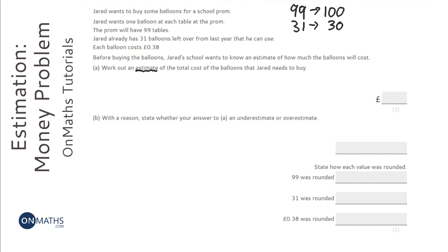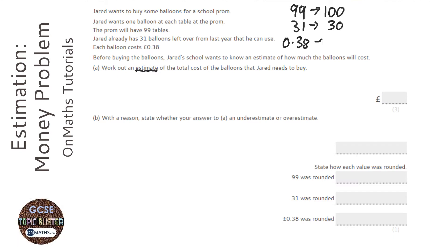The last one, we've got 0.38. Now, you might think: is that going to go to 50p or is that going to go down to 0? There is a rule — you round everything to one significant figure, unless it's a square root or a division that's easier to do in a different way. So, one significant figure, that's going to be 0.40, or 40p.